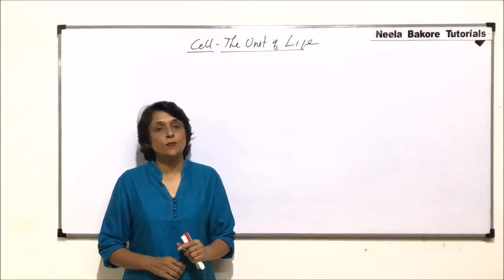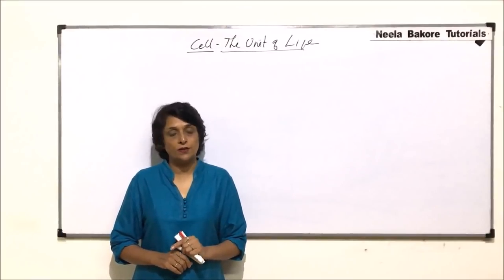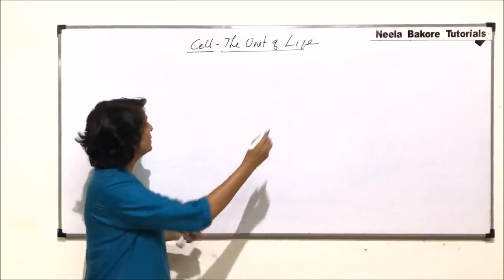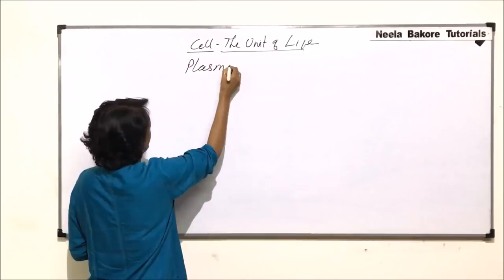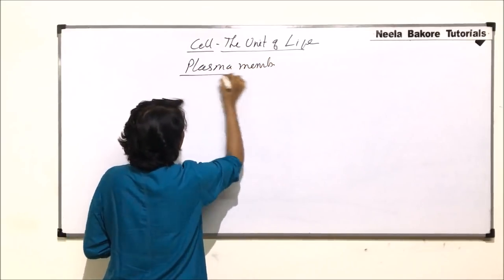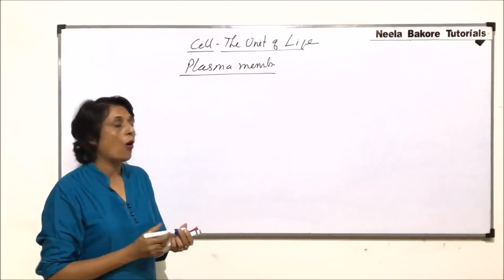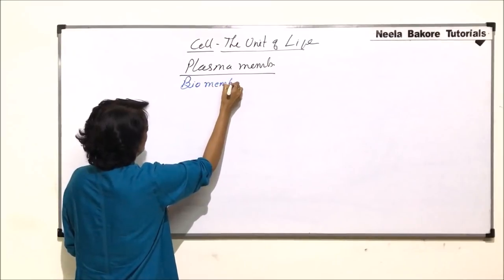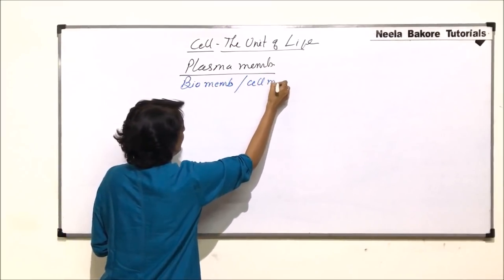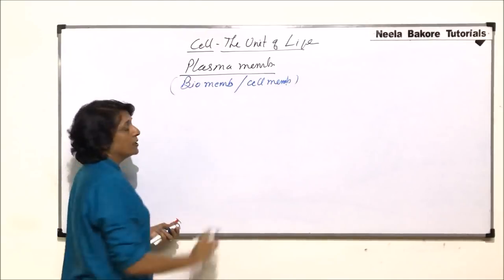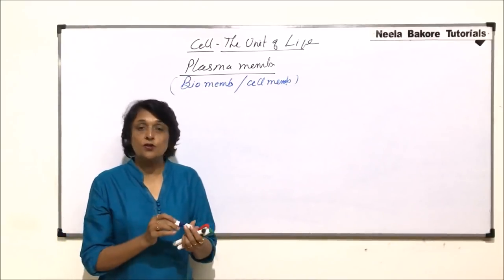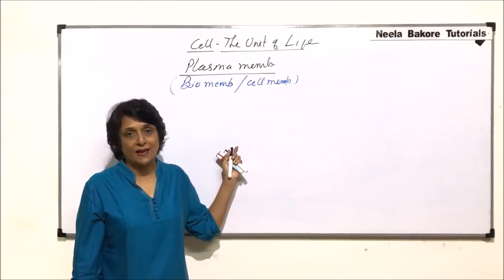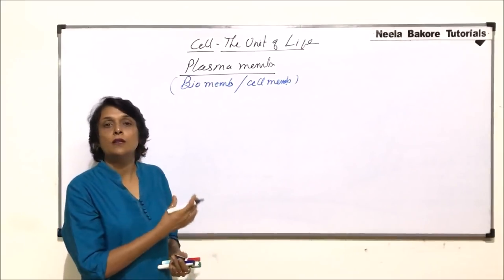We have discussed the structure of prokaryotic cells as well as eukaryotic cells. Now we will be taking various parts of the cell, and the first is plasma membrane. This plasma membrane is also known as biomembrane or cell membrane. It is also called a unit membrane based on the structure that it has. But before that we will talk about the properties of plasma membrane and see what the nature is.